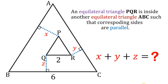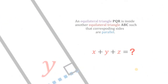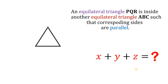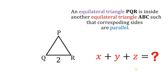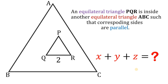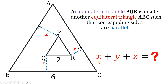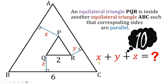For today's video, we will answer a geometry challenge given by one of our followers. The question goes like this: an equilateral triangle PQR with a side length of 2 units is inside another equilateral triangle ABC with a side length of 6 units, such that corresponding sides are parallel. From the vertices of PQR, let's draw a perpendicular line directly to the side of the large equilateral triangle ABC. Now let's call them X, Y, and Z. The question is: what is the value of X plus Y plus Z? You can pause this video if you want to give this problem a try.